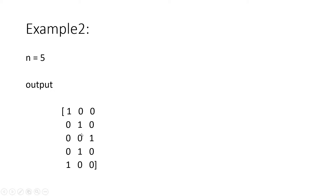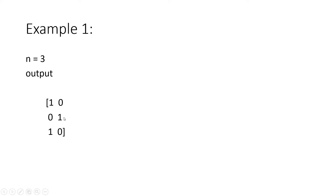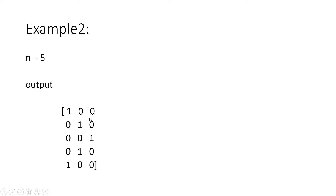From the examples it is clear that the number of rows in the output matrix equals the input n. For n=5 we get 5 rows, for n=3 we get 3 rows. The number of columns differs for different inputs. Observing each column: the first column has ones at positions 1 and 5 (the two terminals), and in each subsequent column the ones shift inward by one position toward the center.